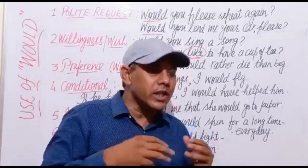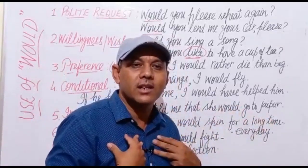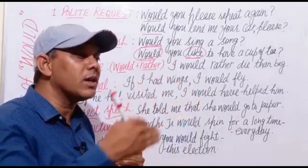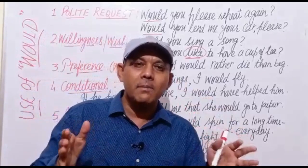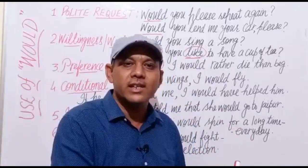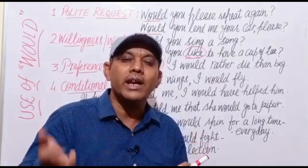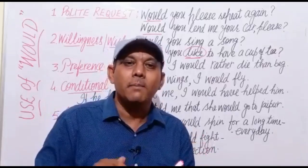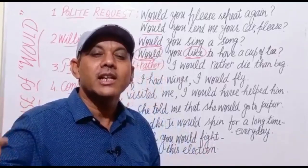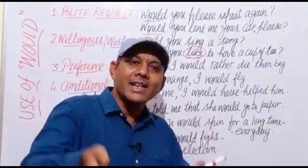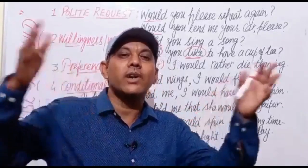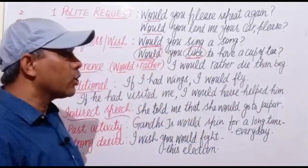If the wish is my own, I also use would to express my wish for someone else. For example, as a stage secretary wanting to invite the chief guest, I say: I would like to invite the chief guest Sri so-and-so on the stage, please. I would like to invite him — it is my wish and the wish of the audience. In this way, we use would.